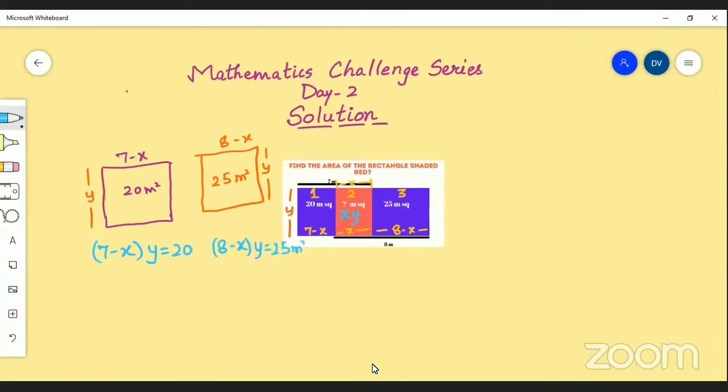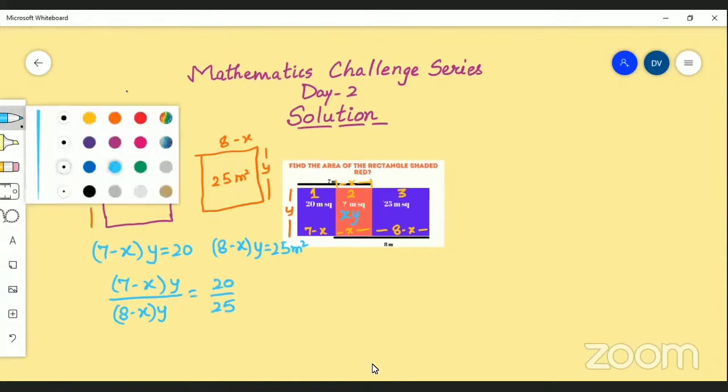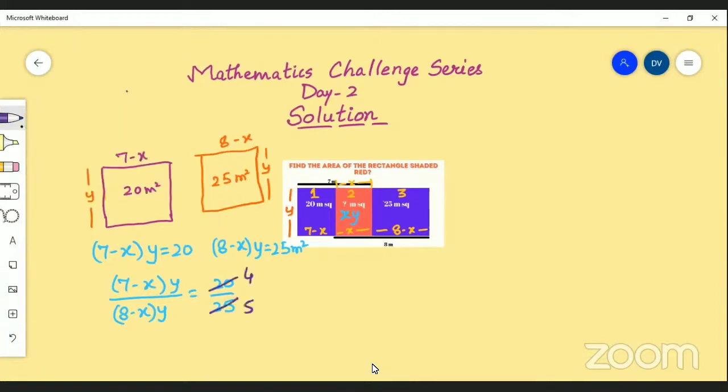So here you have to divide. It is 7 minus x into y upon 8 minus x into y equals 20 upon 25. So if you will cancel it you will get 4 by 5.